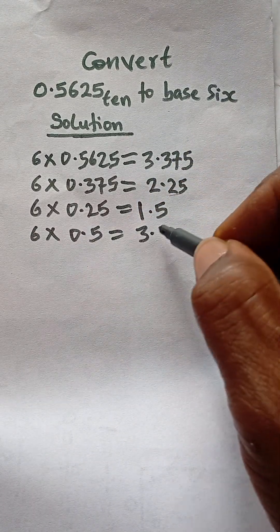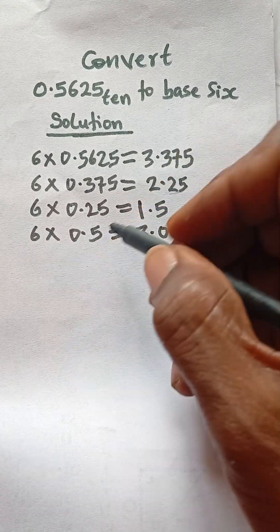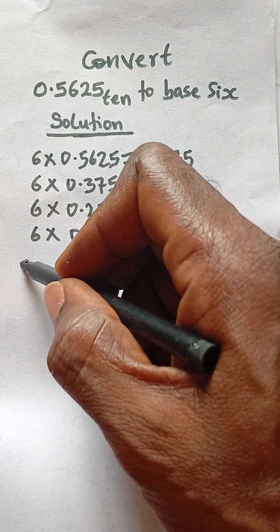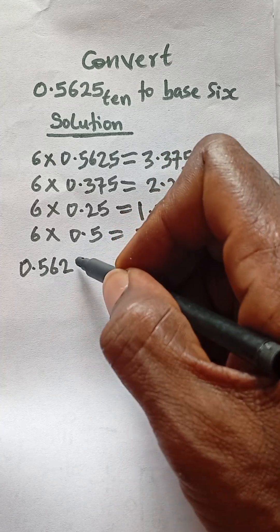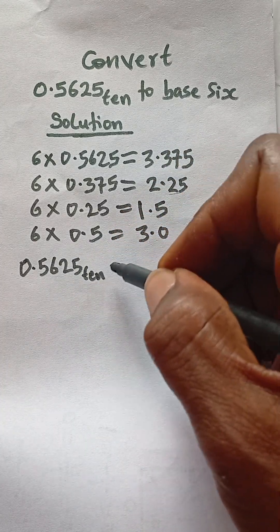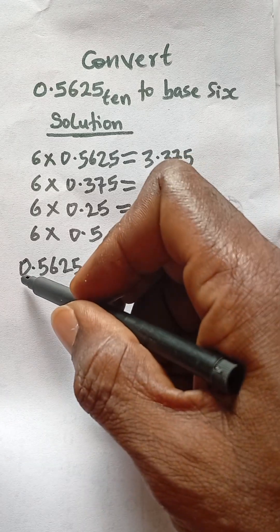So now your answer becomes: 0.5625 in base 10 will be equal to, you take the same 0, 0 point